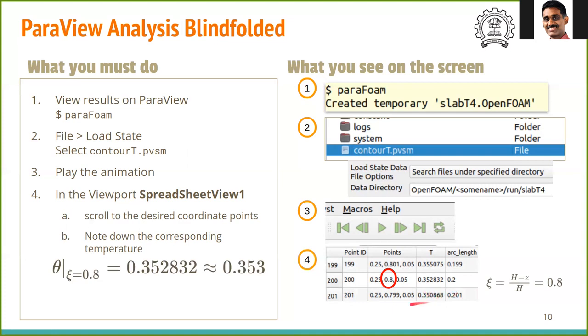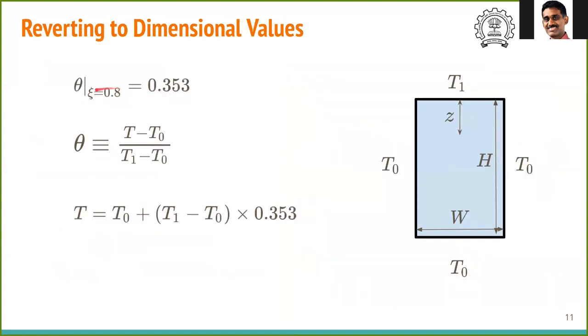Now we need to revert back to the dimensional variables. We found from the spreadsheet that θ is 0.353. Going back to the definition of θ, we can back calculate the value of temperature from this expression by substituting the values of T₀ and T₁. That's all.